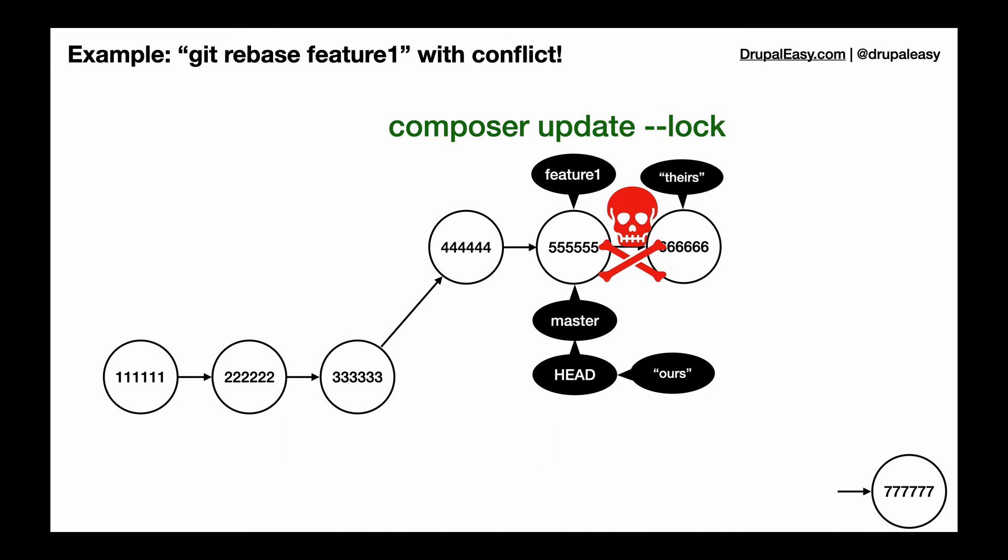When we do a composer update --lock, that actually takes information from the composer.json, composer.lock, as well as the vendor directory and regenerates that composer.lock file, and only the composer.lock file. This command, when you use --lock, will not update any of your dependencies.